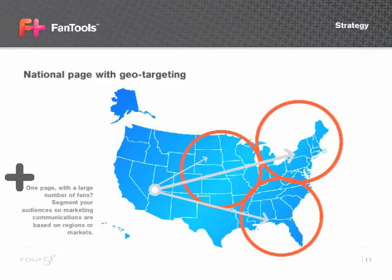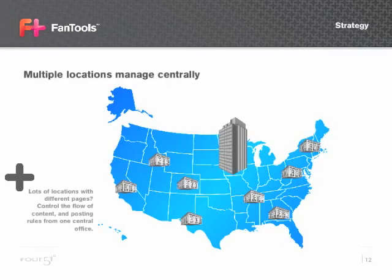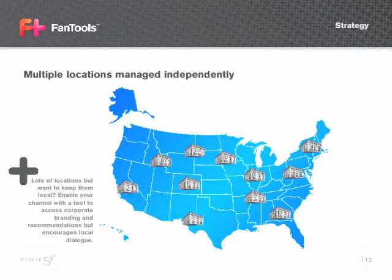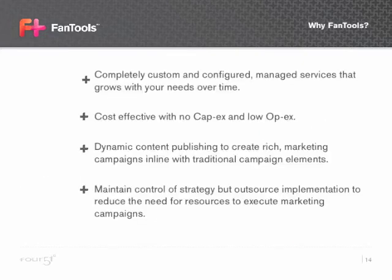If you have a single national social media presence, Fantools helps by geo-targeting your marketing messages and campaigns by regions and markets. If you have a central marketing operation but a lot of physical locations, Fantools helps maintain consistency when you have multiple social media accounts across those locations. If you have a lot of locations wanting to have social media accounts and do their own marketing at the local level, a Fantools solution helps you organize and enable your channel to be successful.